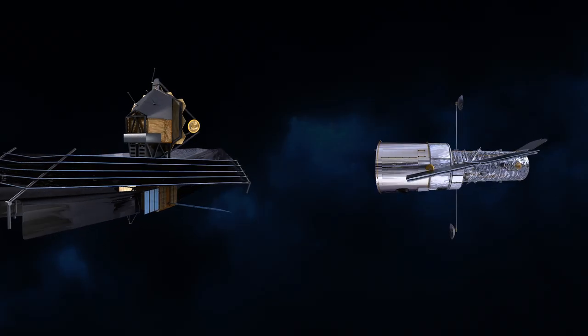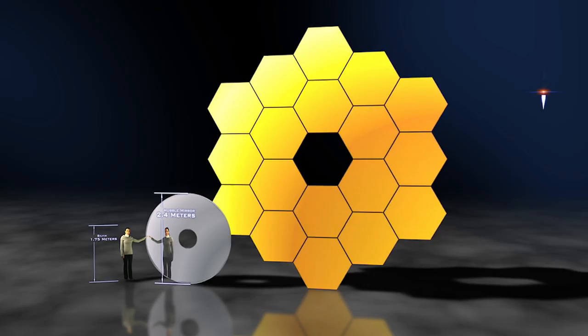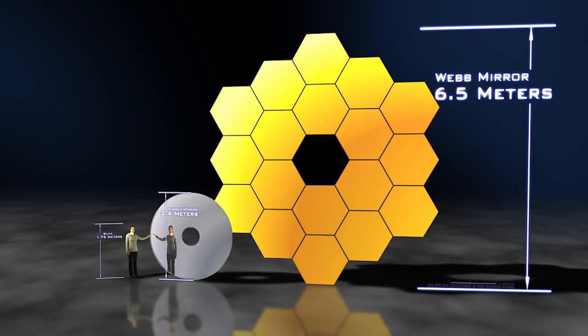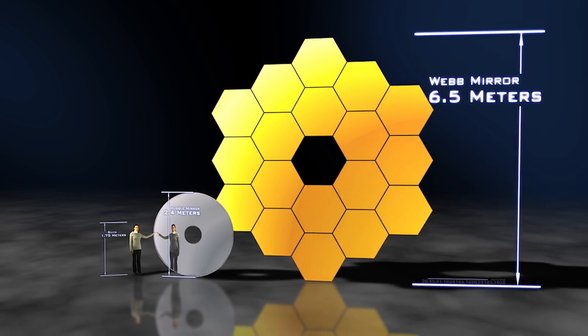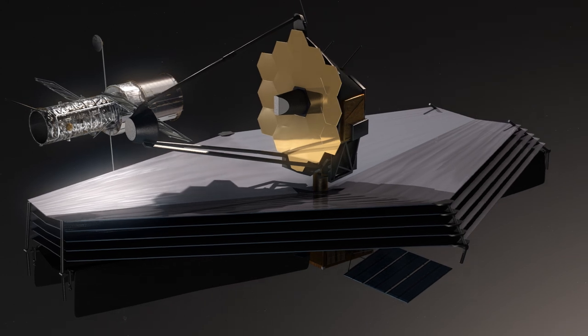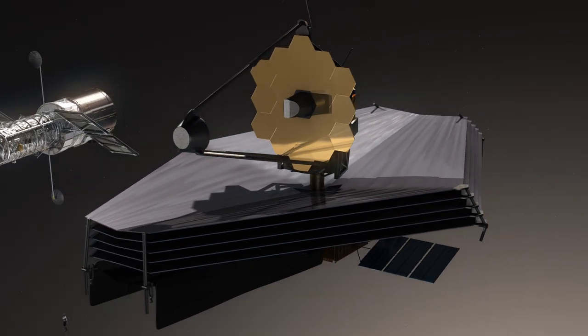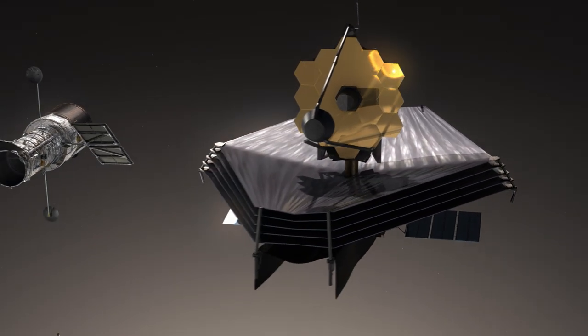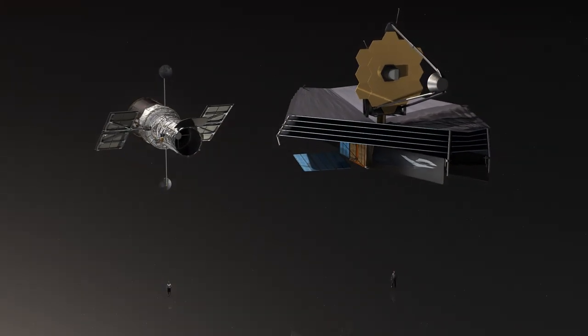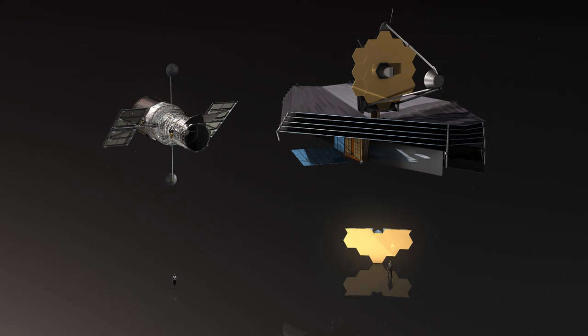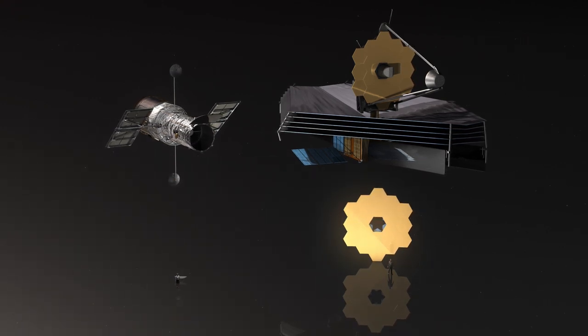The James Webb Space Telescope also has a much bigger mirror than Hubble. It measures 6.5 metres in diameter. Bigger mirrors collect more light from fainter and more distant objects in space, meaning that James Webb will be able to peer further back in time than Hubble, allowing us to develop our understanding of the early universe.